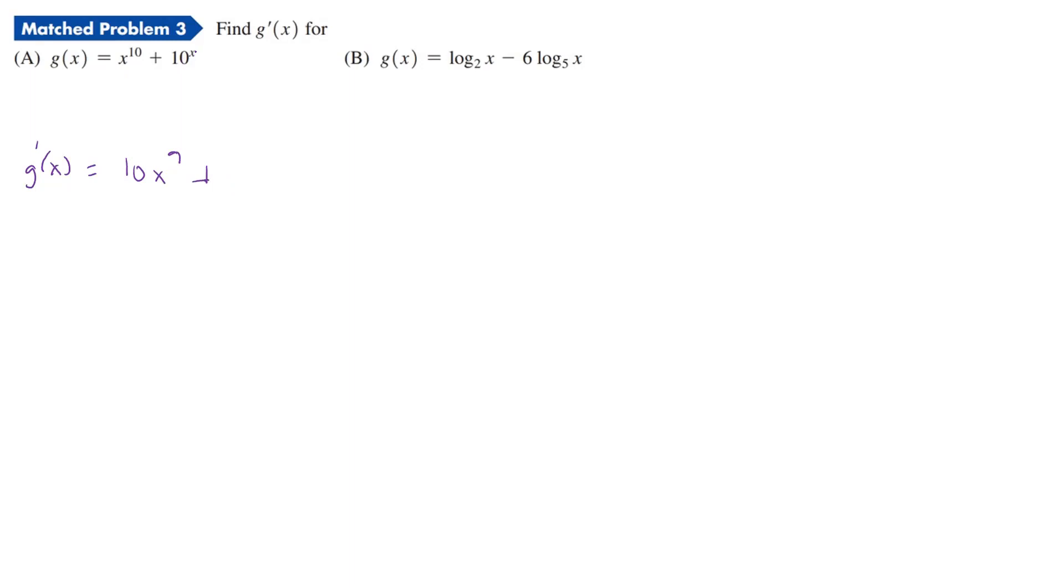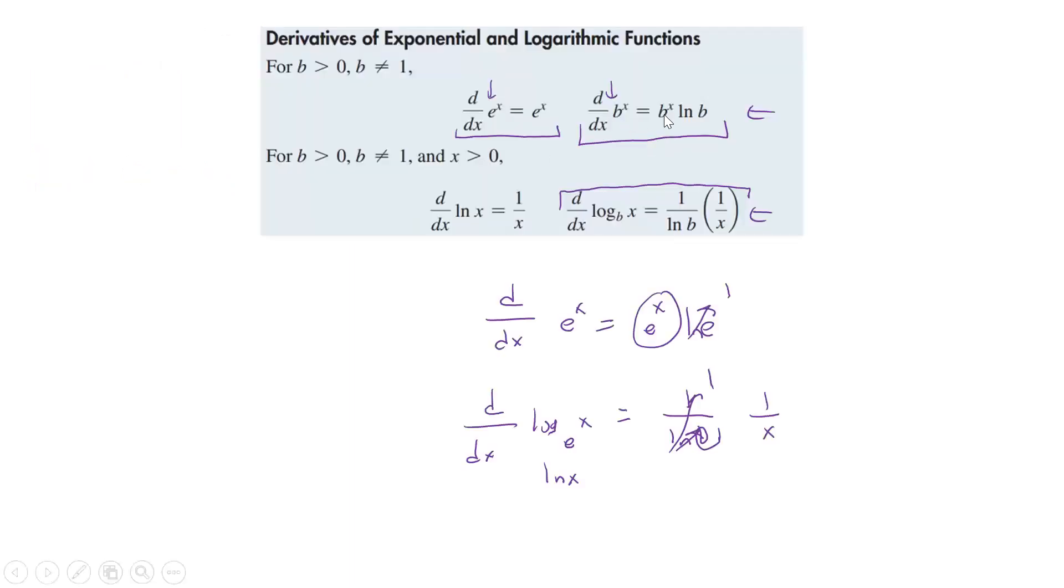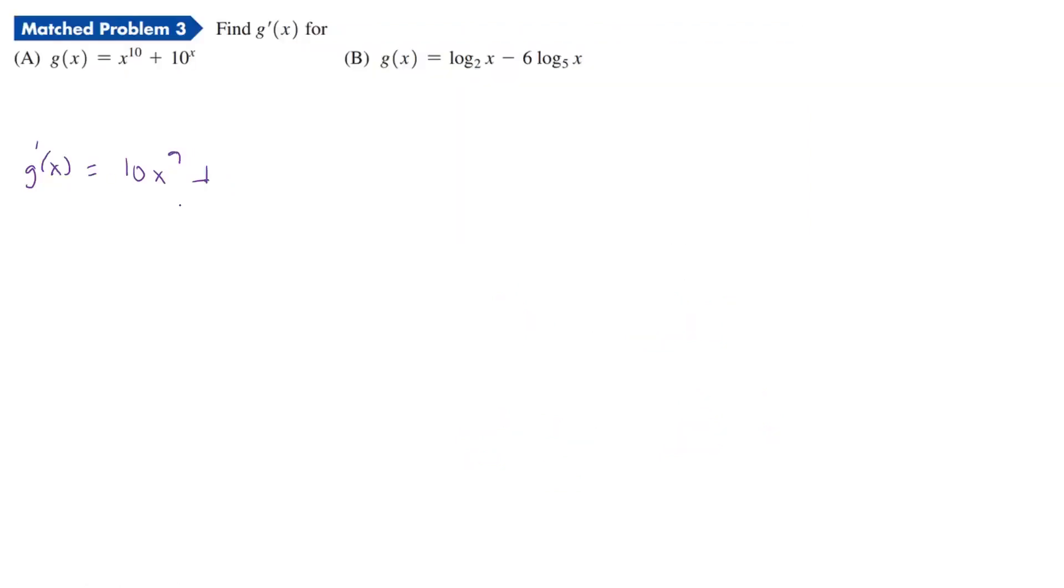Now this one's going to be plus. Now this is some base to the x, so b to the x. So if you remember over here, if we have a b to the x, we have to use b to the x times ln of b. So that's going to be 10 to the x and then ln of 10. And while we could calculate and see what that is, we're just going to leave it as that for now. We're just going to say that's just ln of 10, and that would be our solution.